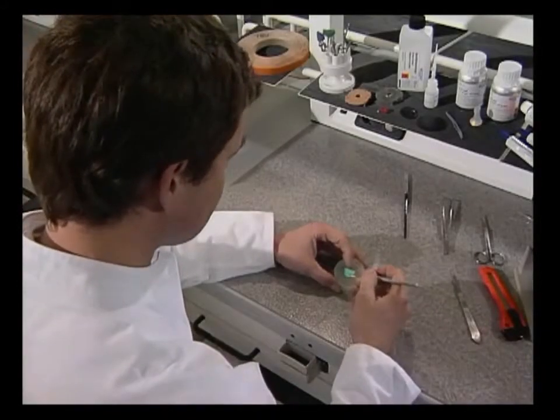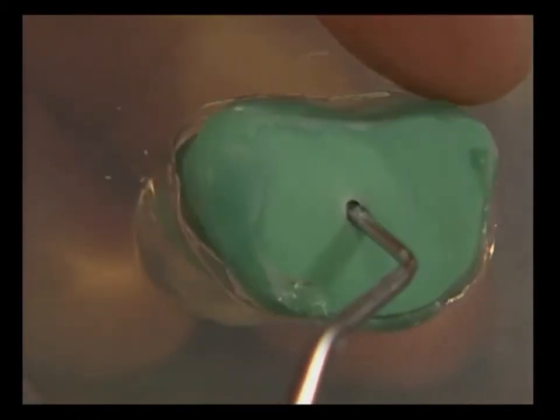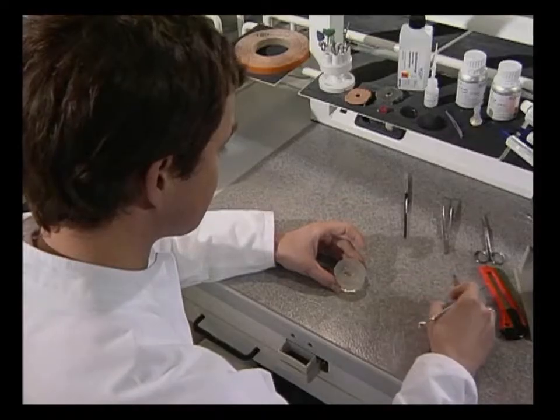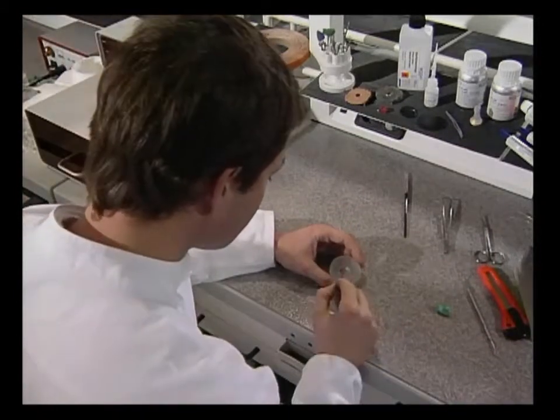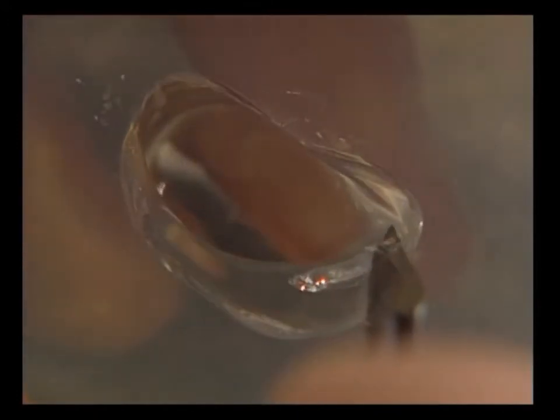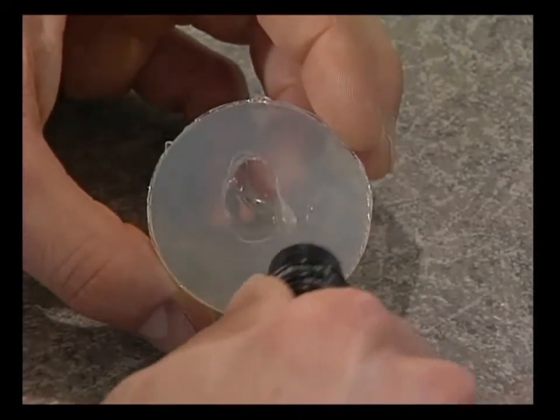The impression removing instrument is then used to take the impression out of the duplicating material without damaging the negative form. Overhanging duplicating materials are cut off at a right angle by a scalpel without damaging the negative form. The form is carefully blown out with a slight pressure.